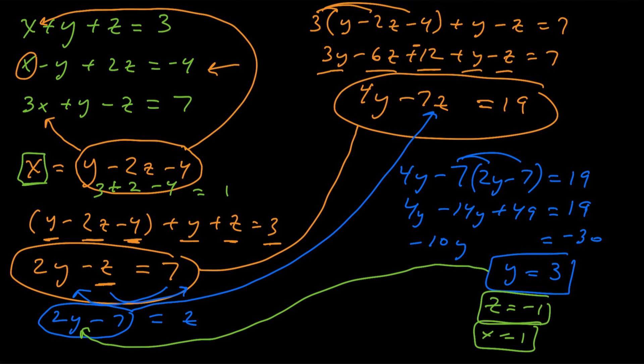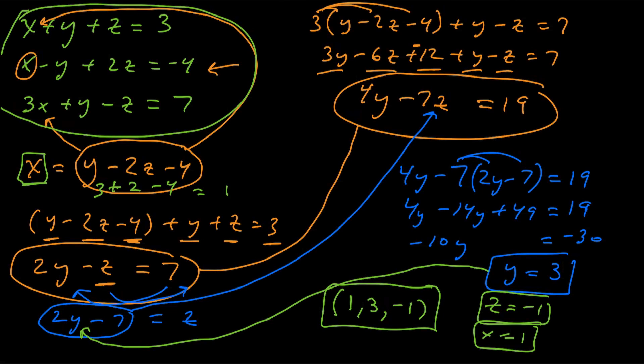And if we write our final answer as a triple x, y, z, alphabetical order, this is going to be 1, 3, negative 1. And you solved that system of equations using the substitution method.